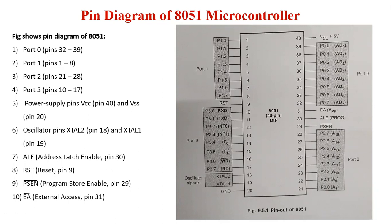The 8051 has 32 input-output pins configured as four 8-bit parallel ports: P0, P1, P2, and P3. All ports are bi-directional, meaning each pin can be configured as input or output. All port pins are multiplexed except the pins of port 1, and each port consists of a latch, an output driver, and an input buffer.